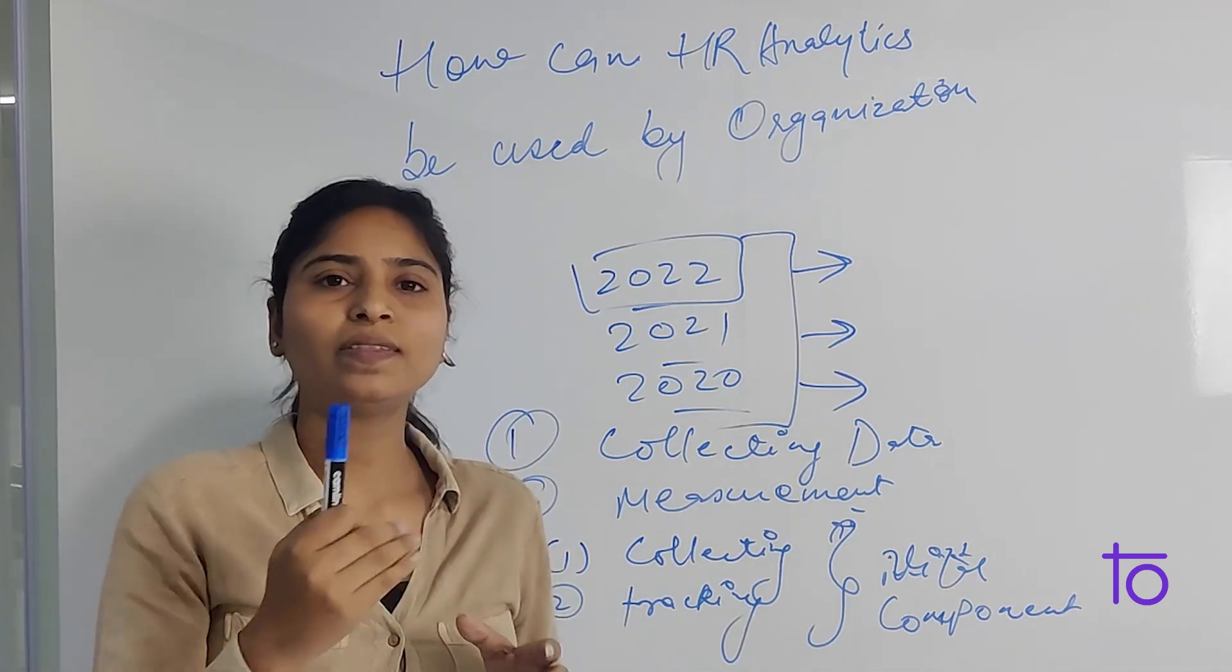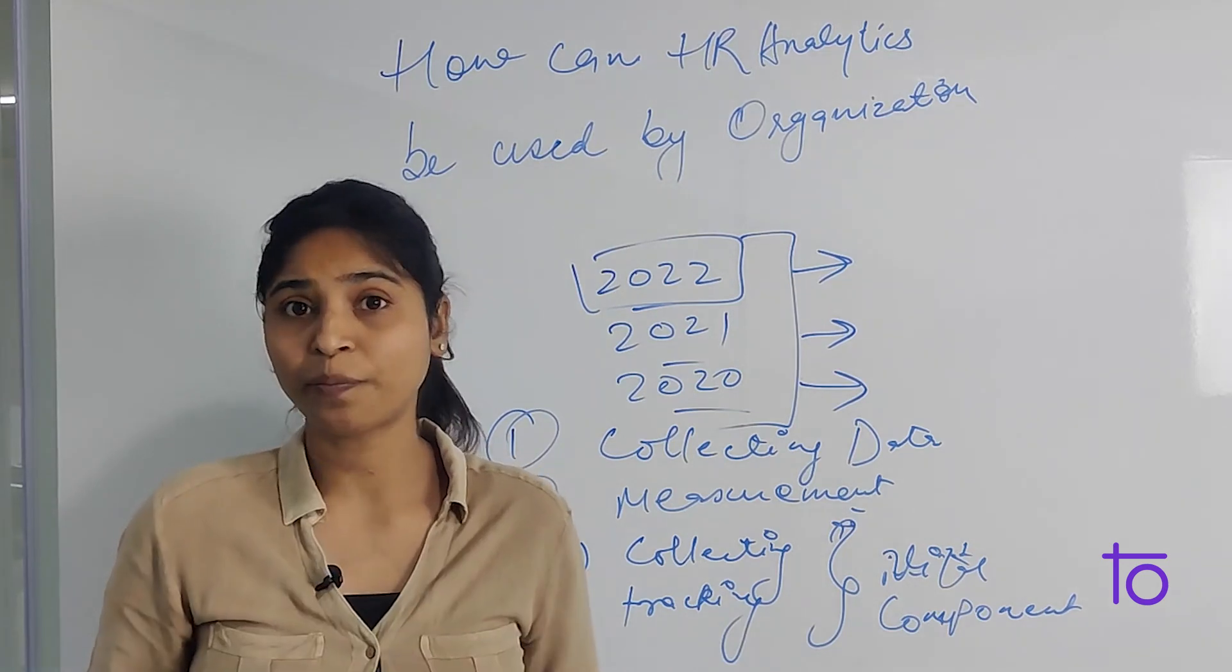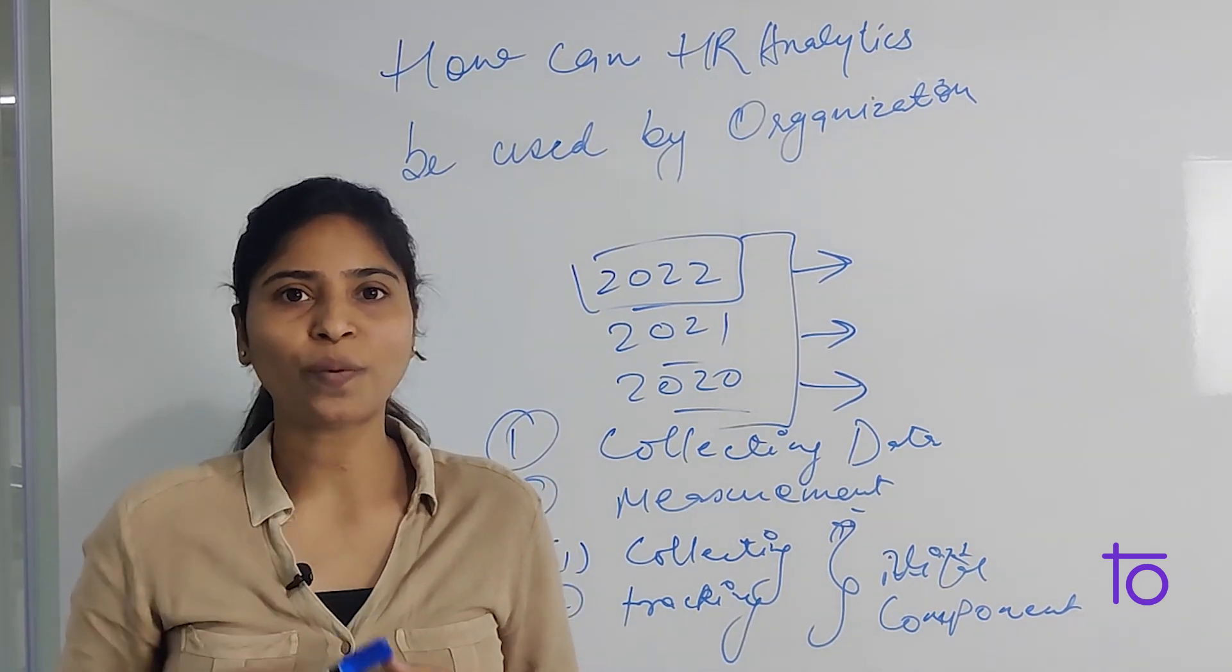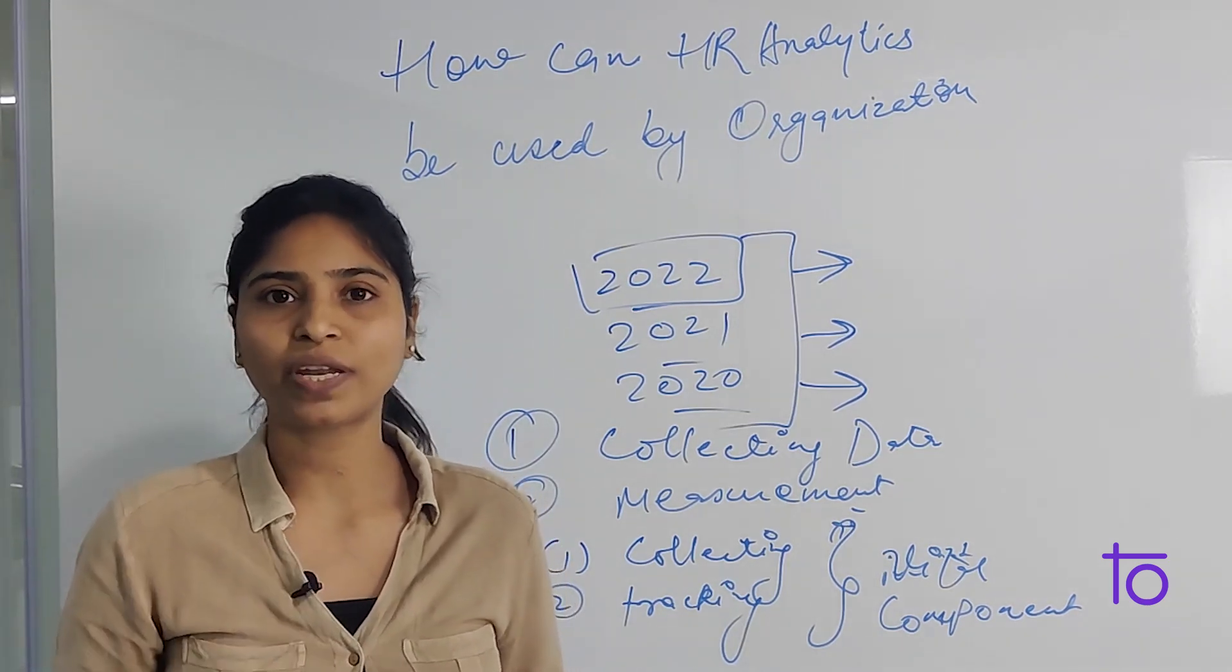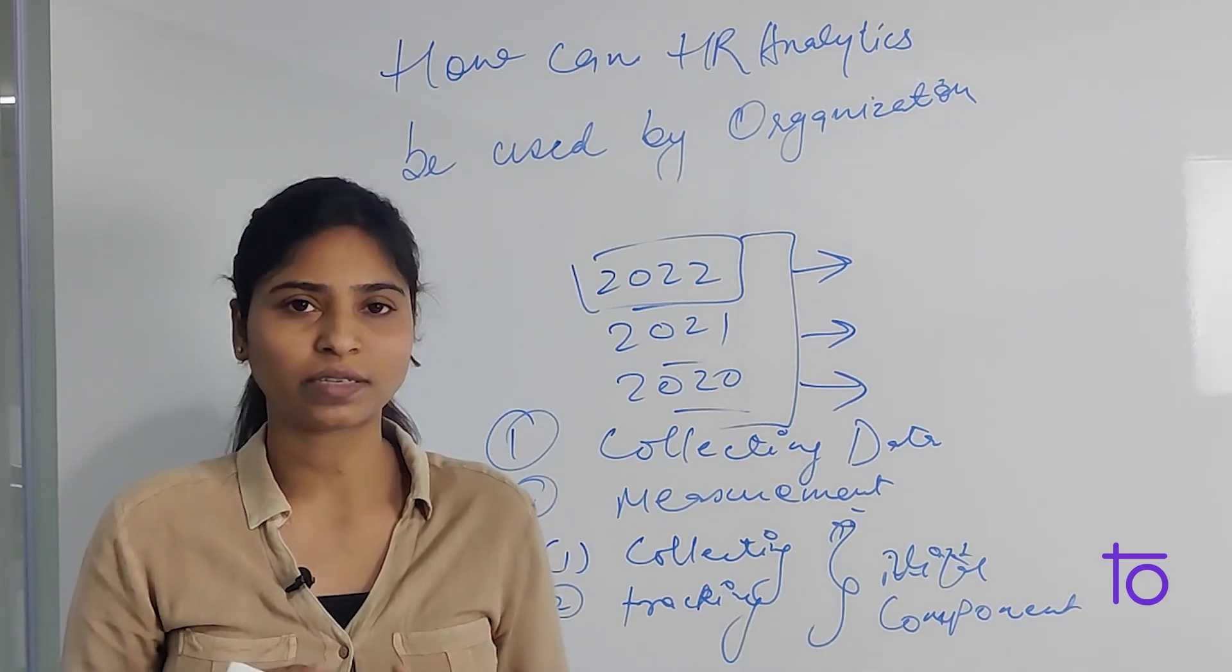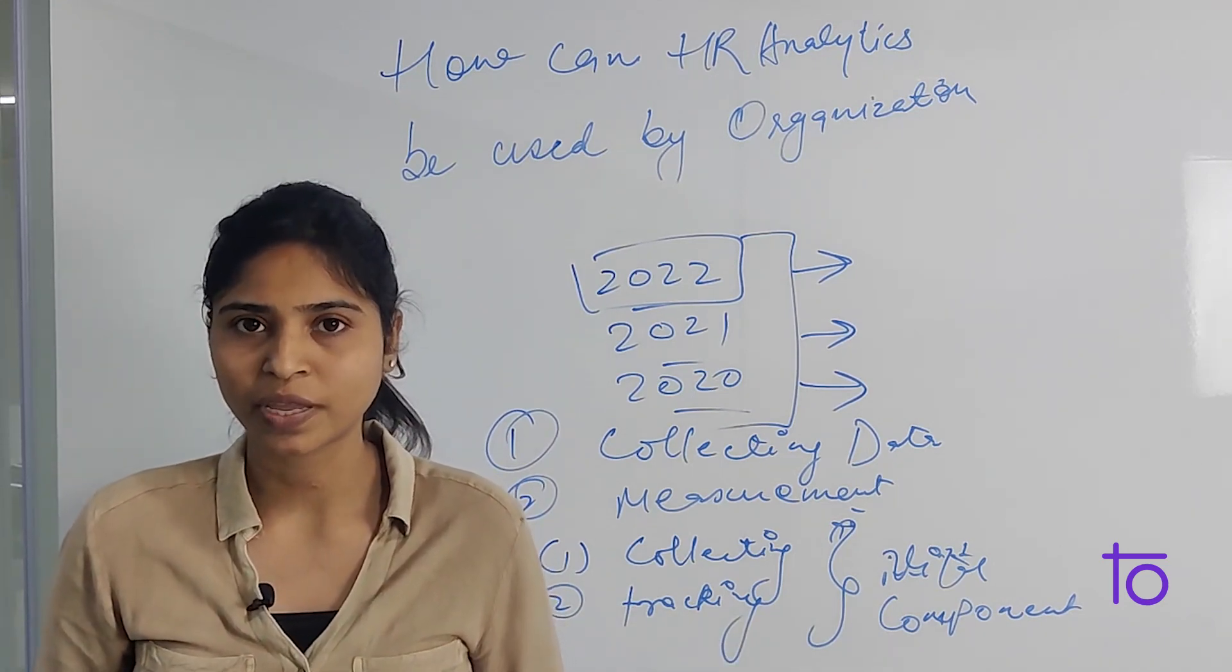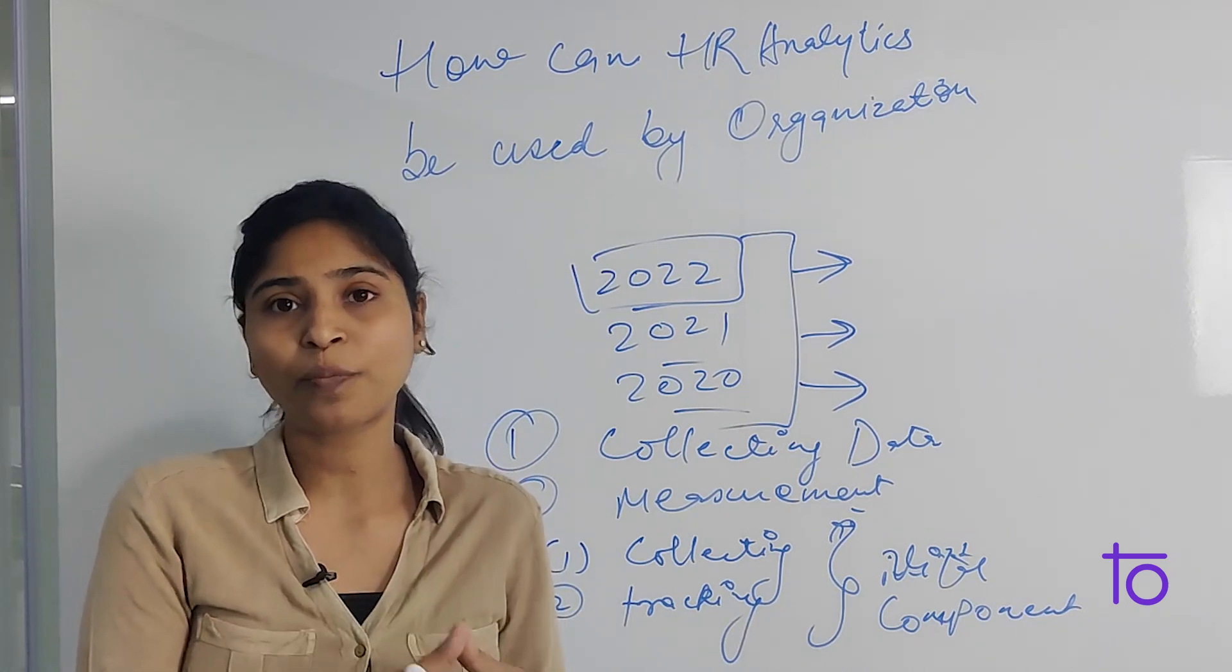Before collecting the data, we need to keep two things in mind which are very important. The data should be easily obtainable and should be capable of being integrated into the reporting system. Each organization uses some reporting system, so whatever data we are collecting should be easily capable of being integrated into that reporting system.